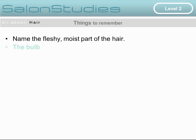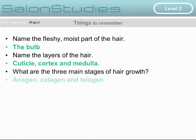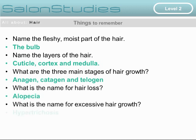What is the name of the fleshy and moist part of the hair? It's the hair bulb. Name the layers of the hair — there are three: the cuticle, cortex and medulla. What are the three main stages of hair growth? Anagen, catagen and telogen. And we give the name for hair loss as alopecia. What is the name for excessive hair growth? That's hypertrichosis.